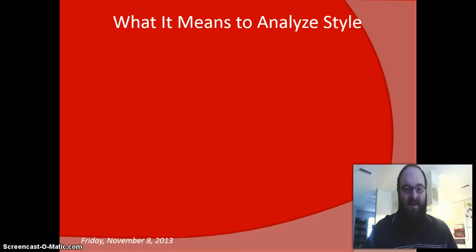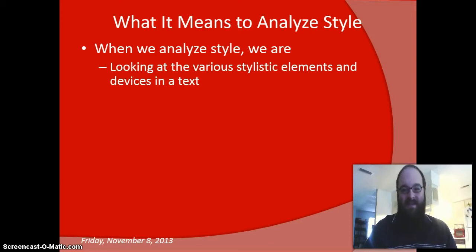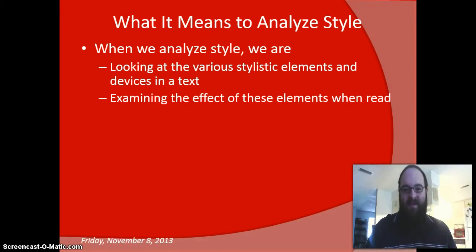First of all, what does it mean to analyze style? Essentially, when we analyze style, we're looking at the various stylistic elements and devices in a text — things like metaphors, figurative language, imagery, and personification. We're also looking at more advanced devices you probably haven't gotten into yet, like anadiplosis and epistrophe — all those fun Latin and Greek terms. These are all what we call devices, because they're mechanisms of language. We examine these elements and look at the effect they have when read, since authors use them to achieve a specific effect beyond what they're literally saying.